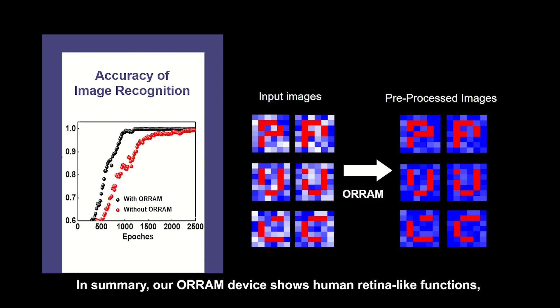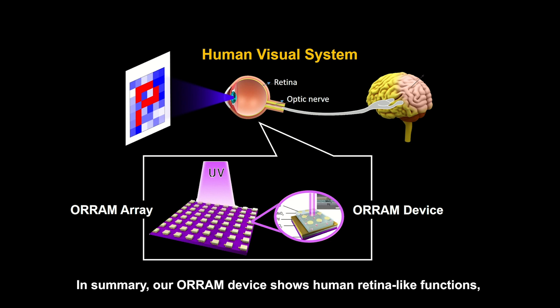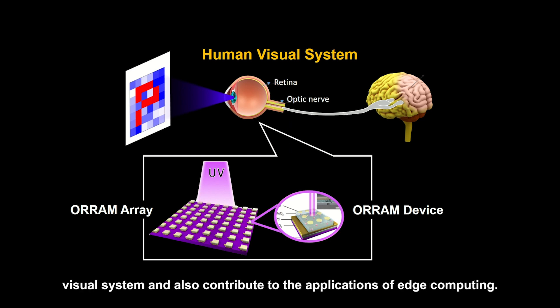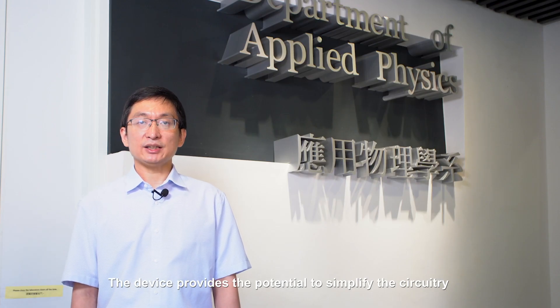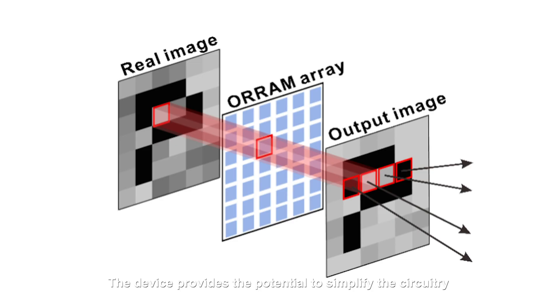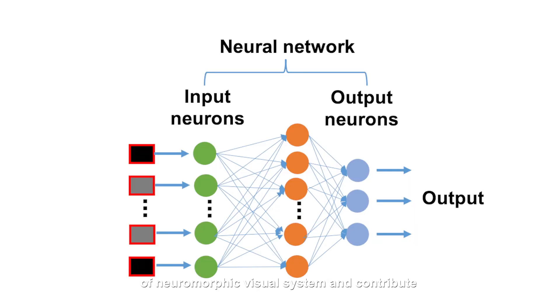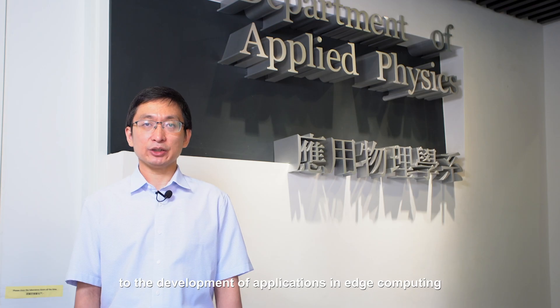In summary, our RAM device shows human retina-like functions, which can be used to simplify the circuitry of an artificial visual system and contribute to the application of edge computing. The device provides the potential to simplify the circuit of a neuromorphic visual system and contributes to the development of applications in edge computing and the internet of things.